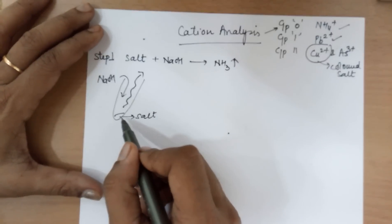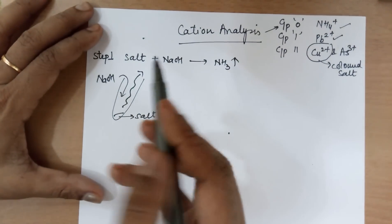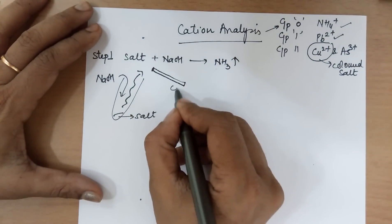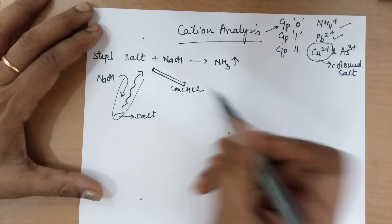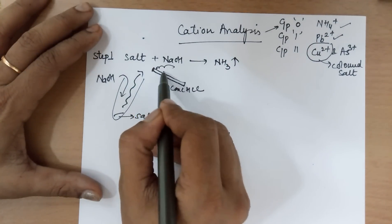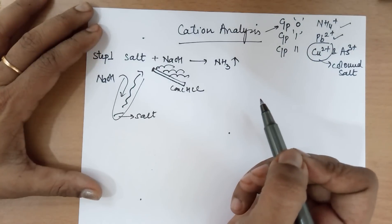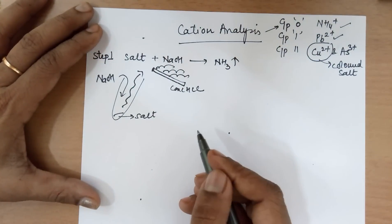Now, let us assume you took the salt in a test tube, added NaOH and the gas came out. Bring a glass rod dipped in concentrated HCl near the mouth, not into the mouth, just near the mouth. And you would find dense white fumes of ammonium chloride escaping from it. That is one way of testing it.